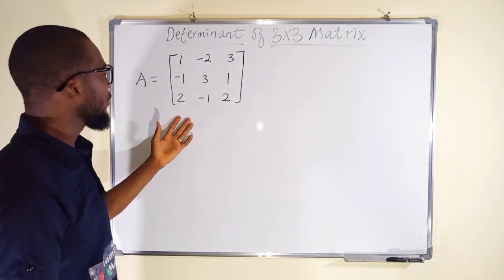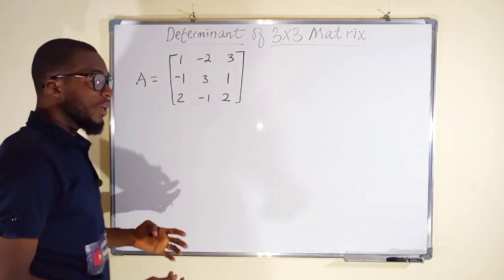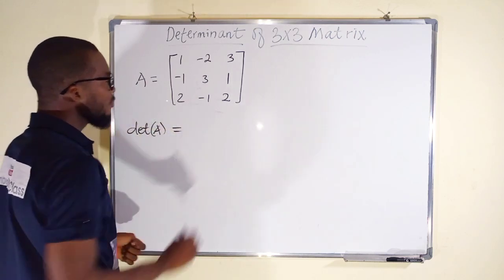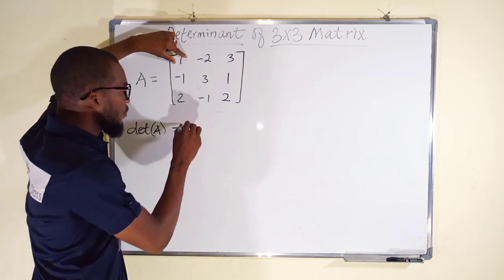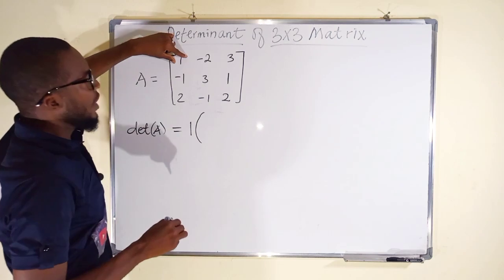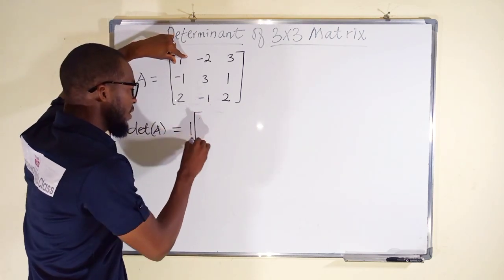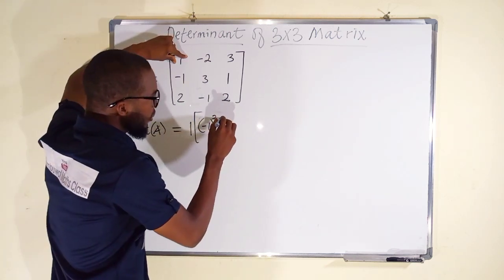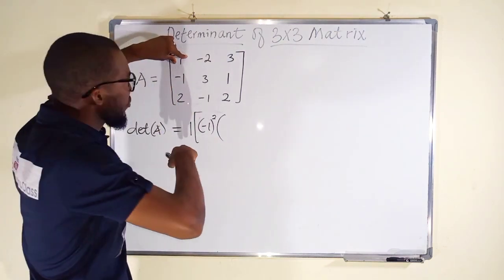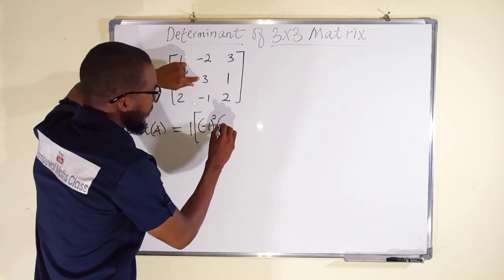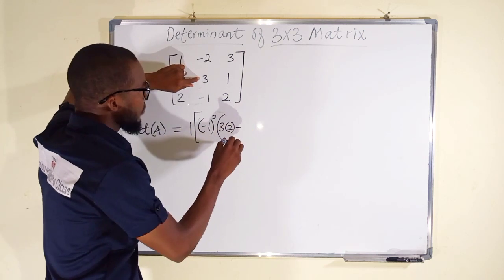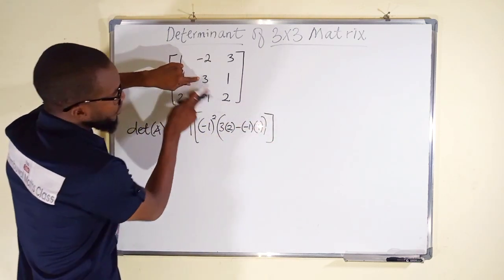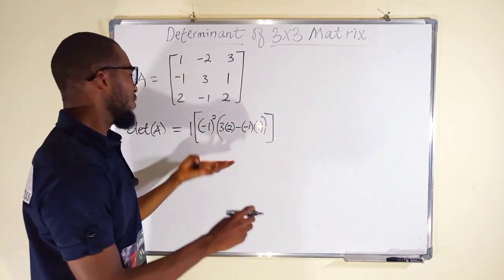Suppose we have matrix A, which is a 3 by 3 matrix, and we want to find its determinant. Applying the formula, the determinant of matrix A equals: we start with the first row, first column element, which is 1. Multiply by the cofactor — negative 1 raised to the power of 1 plus 1, which is 2. Cross out this row and column; what remains is 3 multiplied by 2 minus negative 1 multiplied by 1. This is the first term.